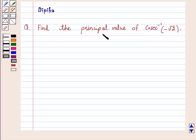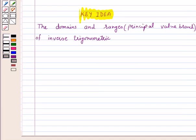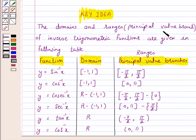So before doing this question, let's see the table. This table shows the domain and ranges, that is the principal value branch of inverse trigonometric functions. And from this table, the range of the principal value branch of cosecant inverse is closed interval minus pi by 2 to pi by 2, excluding 0.